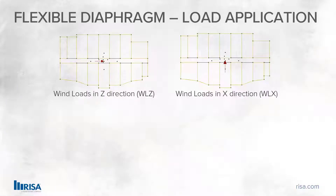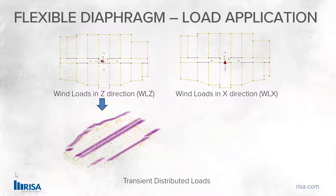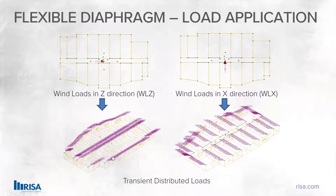Next is the flexible diaphragm. We have load applied at the center of the diaphragm in either the X or the Z direction. Because of the tributary area, with walls orthogonal and perpendicular to the load, we can see the distribution — the load is dragged through as line loads on these walls. In the opposite direction, the same thing: load being dragged through as line loads on top of the walls in that other direction. These we call transient distributed loads.